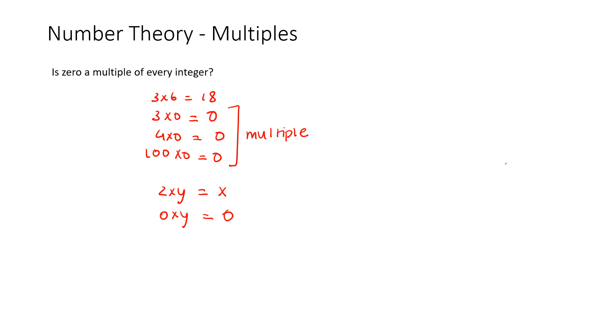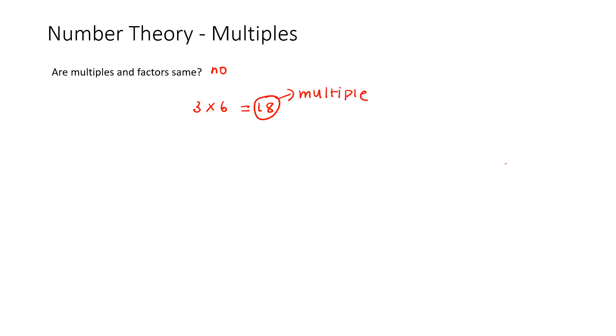And I'm going to say no, they aren't. But why is that? Let's once again take the example of three times six is equal to eighteen. Now we all know that eighteen is our multiple. But if we take three and six, three times six is eighteen, which gives us a multiple, but individually they are factors. And clearly three, six, and eighteen are not the same numbers, so they aren't the same.